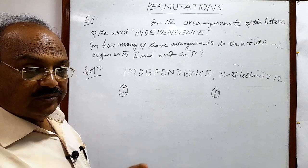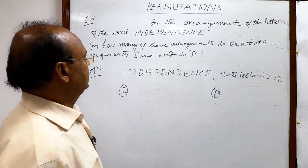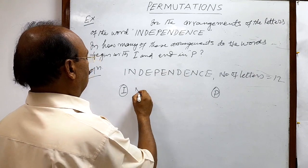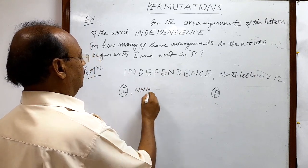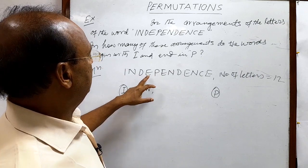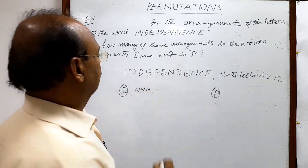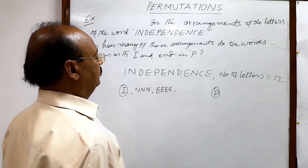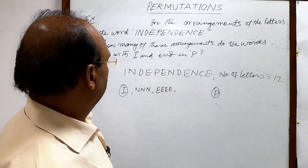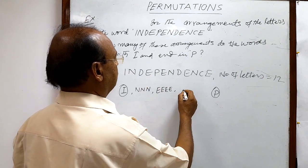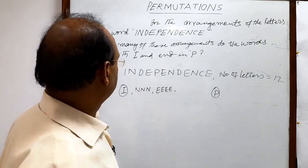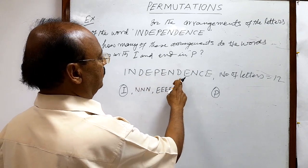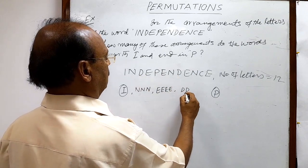You see, there are some letters that are alike. For example, we have 3 N's here. And how many E's? We have 4 E's. And 1 P is here — P we have kept fixed. And how many D's? We have 2 D's.